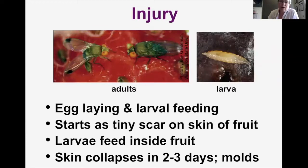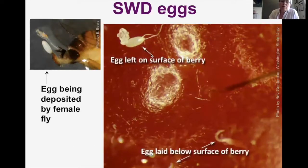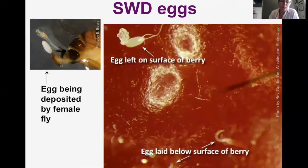A closer look at what the injury is like: it starts with egg laying followed by larval feeding. It starts as just a tiny scar on the skin of the fruit that the adult female cuts with her ovipositor. The eggs hatch very quickly, and the larvae feed inside the fruit. You usually see the skin of the fruit start to collapse in just about two or three days, then you get a lot of secondary issues like molds. The female has saw-like teeth on her ovipositor that she uses to cut a little slit in the surface of the fruit.